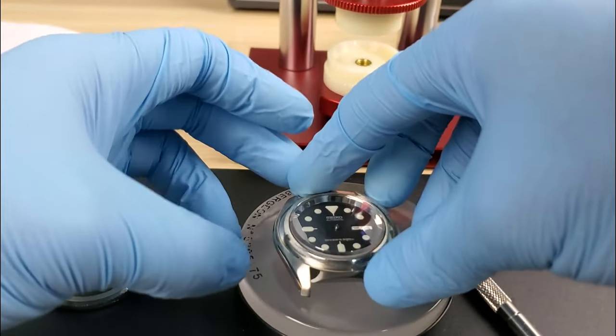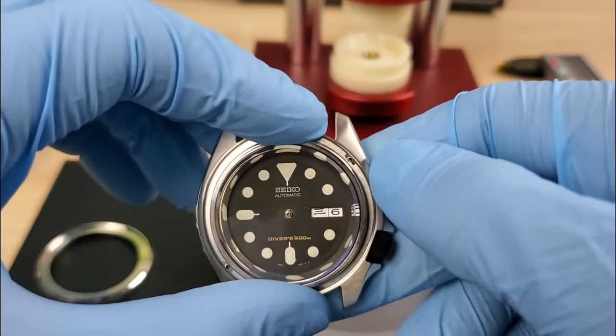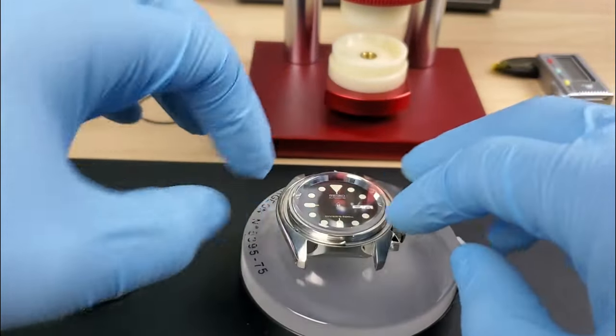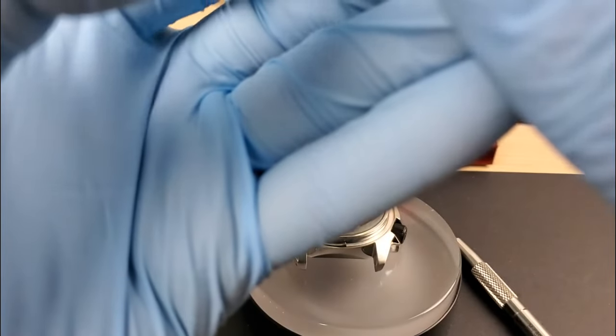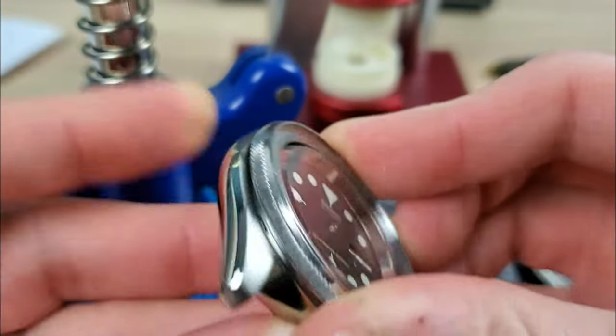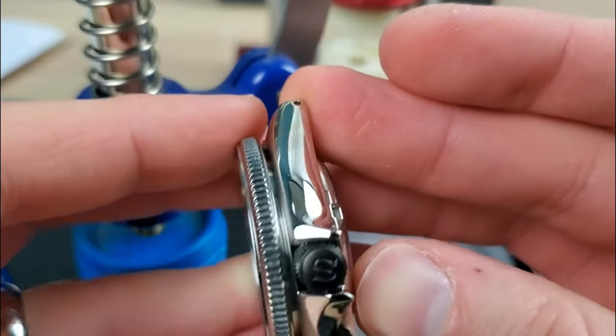We've got the sapphire, the chapter ring, the crown is done, the case back is done. Now we need to do the bezel. It's very simple guys, you just line up the two teeth into the case like that. Boom. You can put silicone grease if you want.